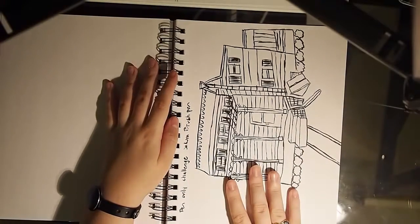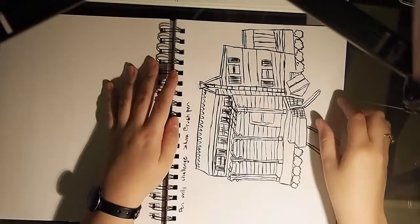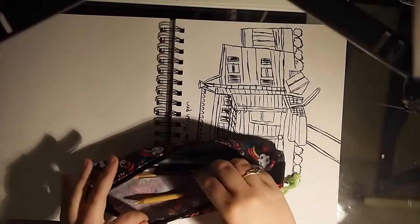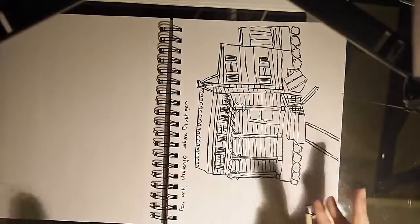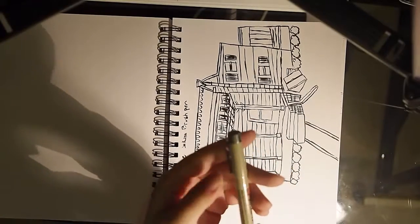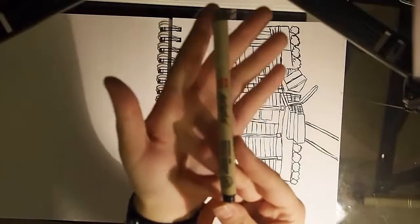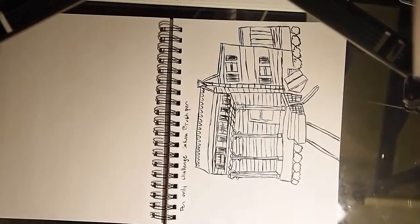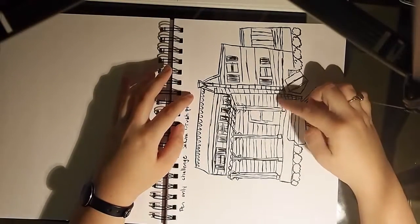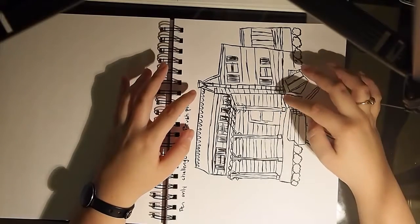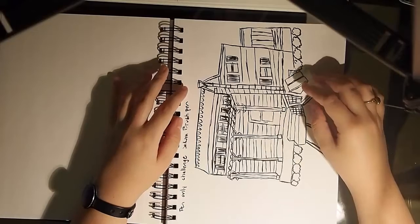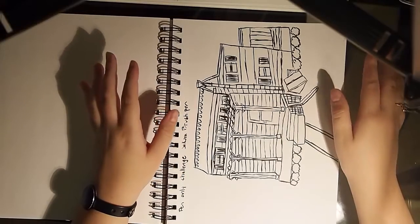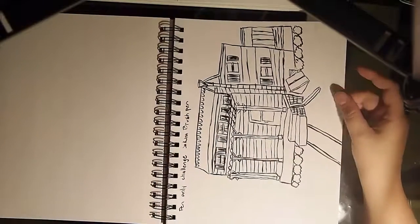This was cool. I did a pen only challenge and it was done with the Sakura brush pen. This was all done without any sketching with only the Sakura brush pen. It's one of the architecture. It's actually a house. I really need to figure out how to do foreshortening and space because the space is a little wonky. But for a pen only challenge with no sketching and no erasing or anything, I think it turned out really well.